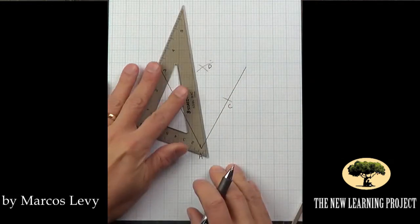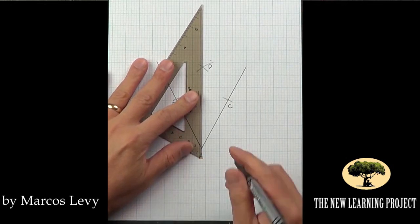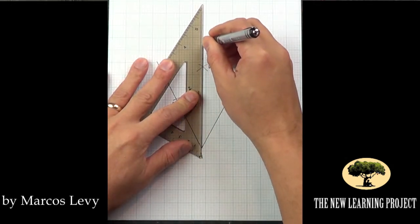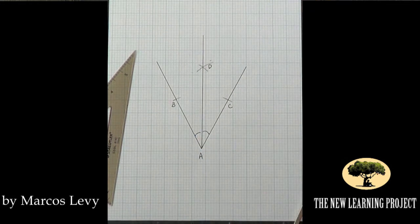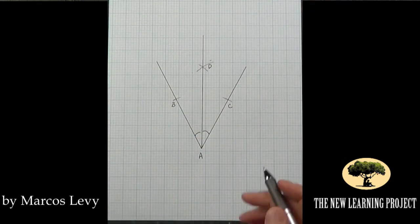I'm going to call that point D and the line between point A and point D, this ray right here, neatly bisects this angle in half. Now we can prove this.